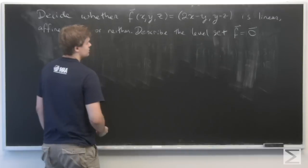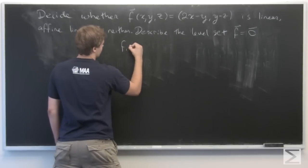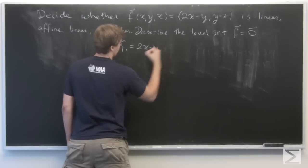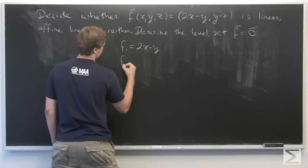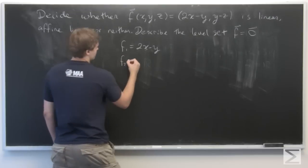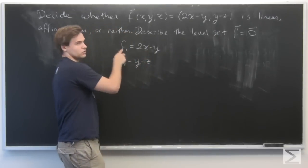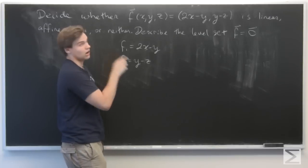So, the two component functions we're given are f1 is 2x minus y, and f2 is y minus z. And keep in mind that these are both functions from R^3 to R.